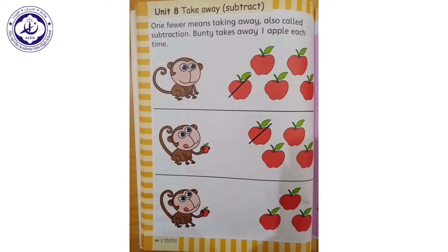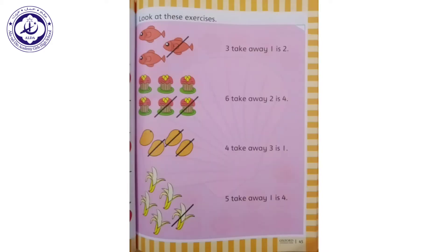One fewer means taking away, also called subtraction. Bunty takes away one apple each time. This is a monkey and its name is Bunty. Bunty has five apples. When Bunty ate one apple, how many apples are left? Count with me: one, two, three, and four. Now complete page number 45 using this pattern.